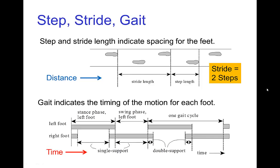Probably more interesting is the gait. The gait indicates the timing of the motion for each foot or each leg — what that leg is doing in time. We might start in the contact pose with both feet on the ground, then transition and enter into the passing position, then leave the passing position, then both feet are on the ground for a certain time, and so forth.